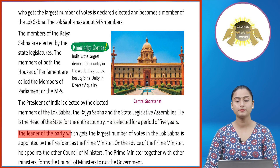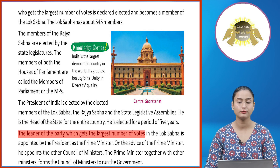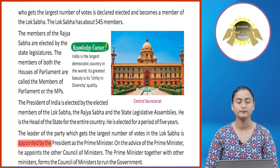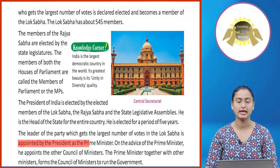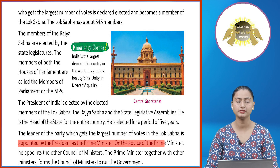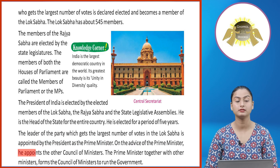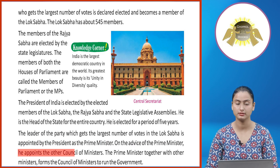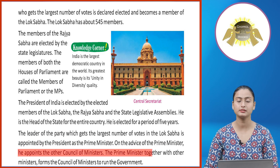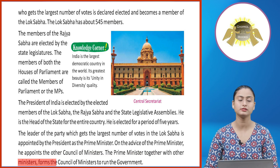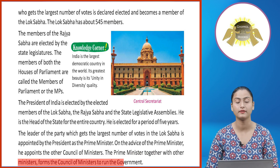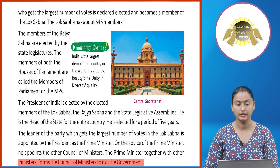The leader of the party which gets the largest number of votes in the Lok Sabha is appointed by the President as the Prime Minister. On the advice of the Prime Minister, the President appoints the other Council of Ministers. The Prime Minister together with other ministers forms the Council of Ministers to run the government.